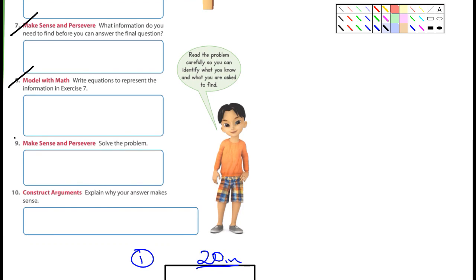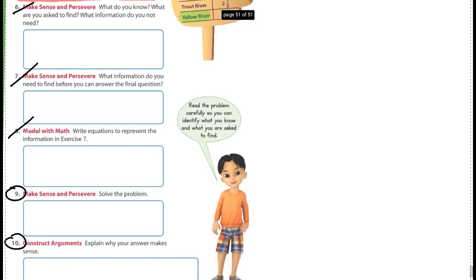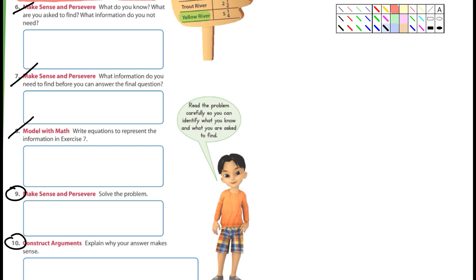So you could do nine. That's essentially the same thing as the question above. And then you could do ten. Ten says explain why your answer makes sense. Now, the way to answer number ten is just to tell me the steps that you did to solve this problem. Really, that's all you're doing. Just tell me the steps that you did to solve the problem. And that's what I want you guys to work on for today.